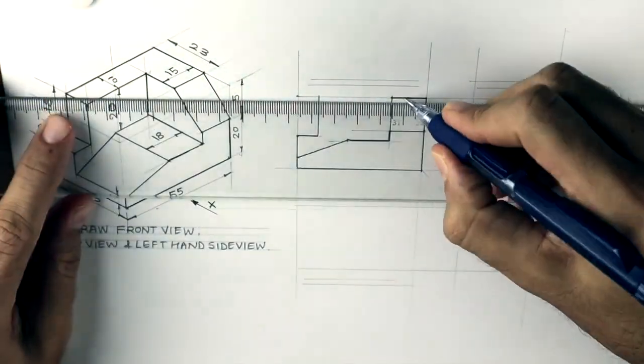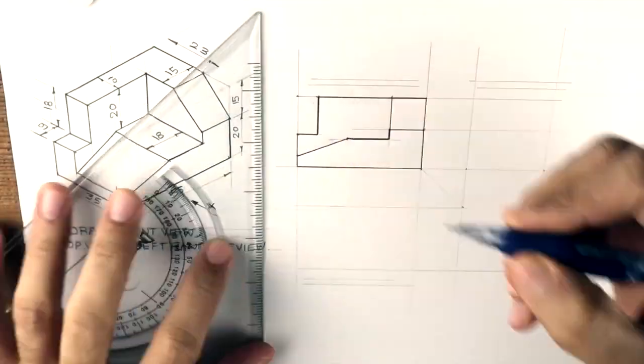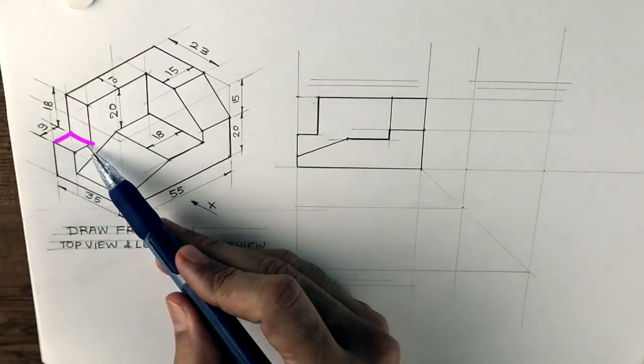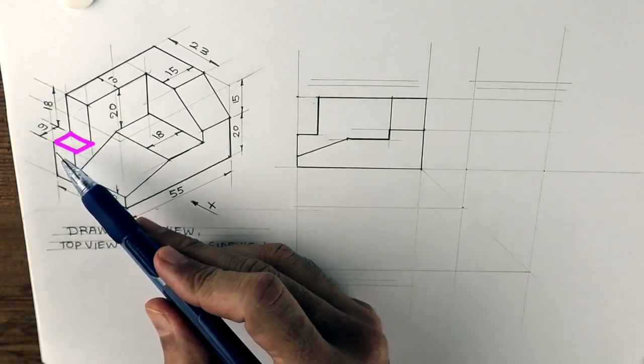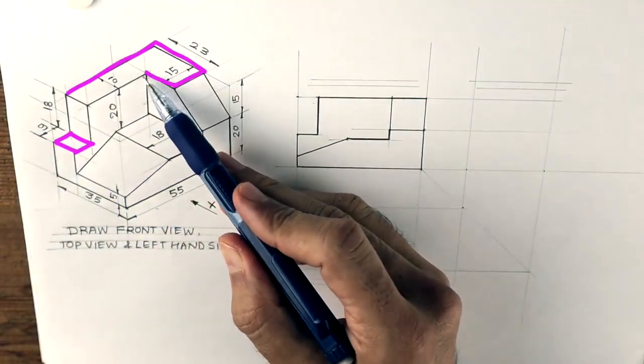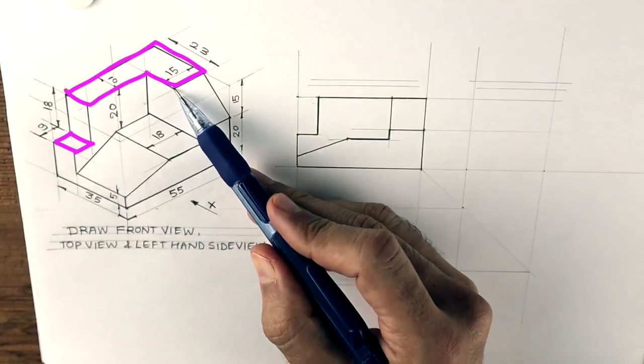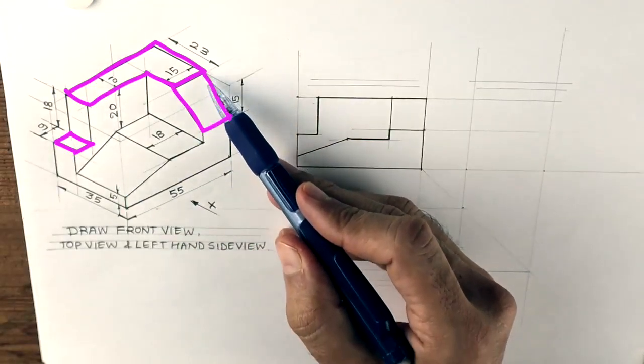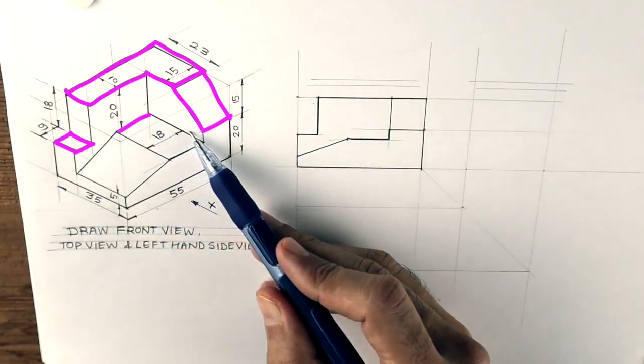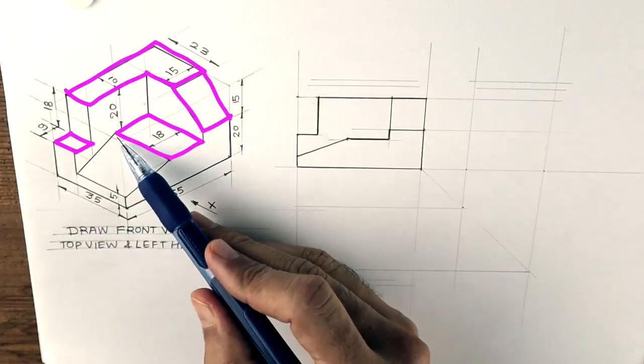So we'll draw this part. We are done with front view. After that, in top view, we can see this small rectangle, this L shape, this slope, another rectangle, and one more slope.